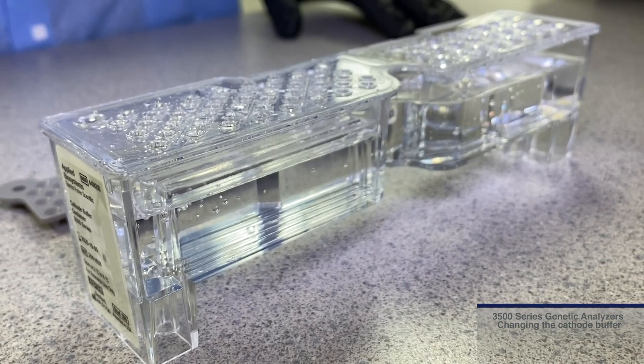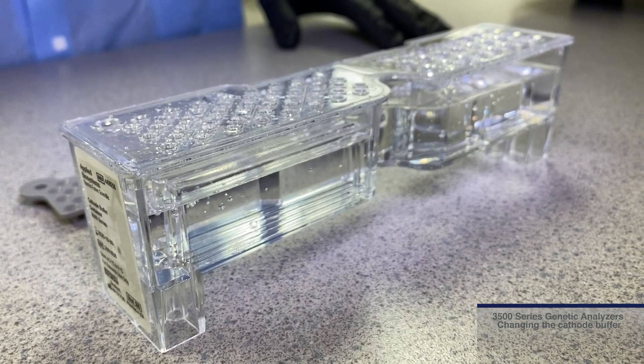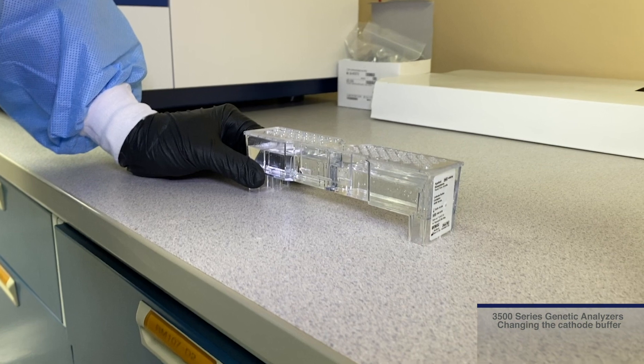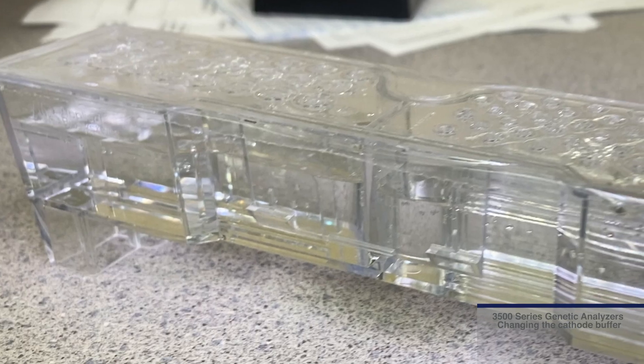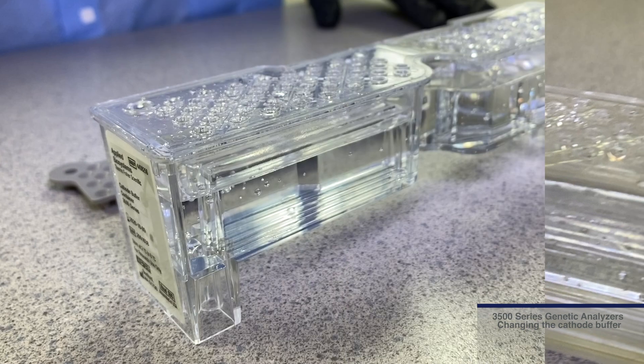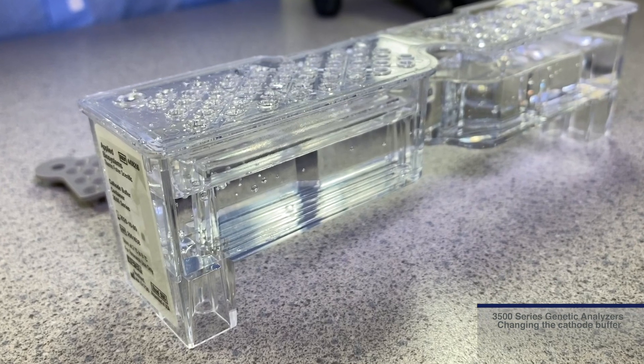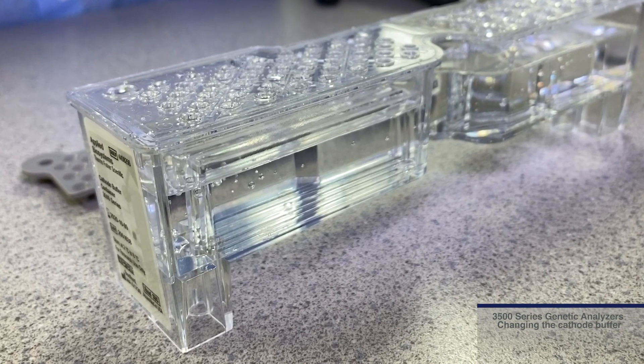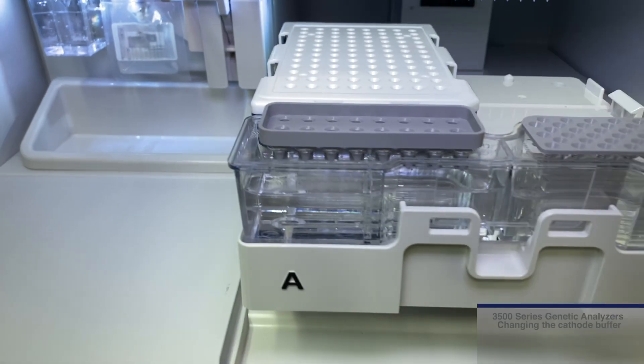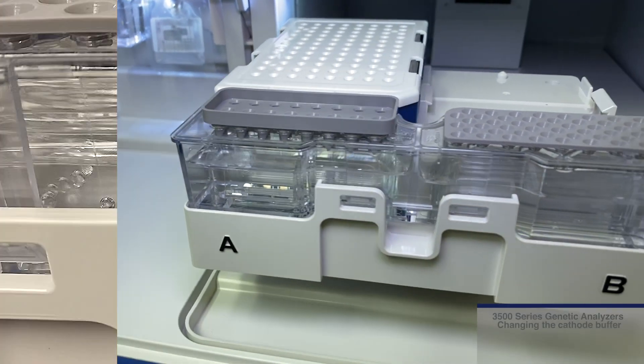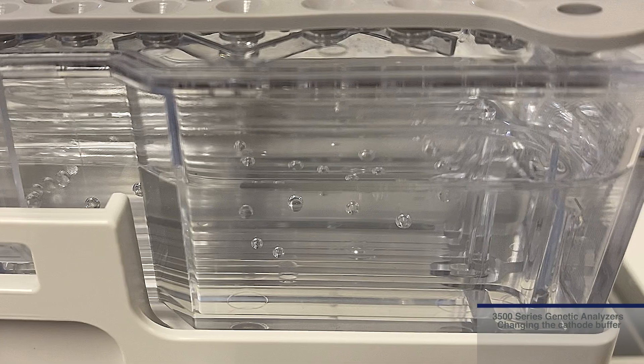The CBC container is divided into two sections. Both sides contain 1x running buffer. The left side supports electrophoresis while the right side is separated with a labyrinth design into a wash and waste section. When placed on the instrument, the labyrinth design ensures no mixing of the waste and wash sections.